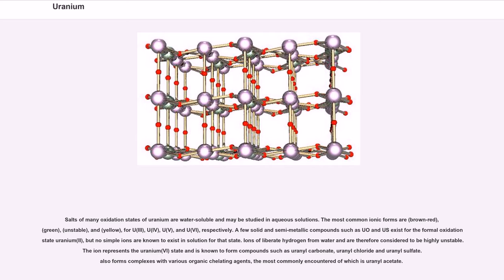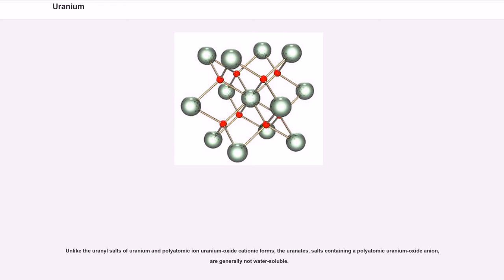Salts of many oxidation states of uranium are water-soluble and may be studied in aqueous solutions. The most common ionic forms are U3+ (brown-red), U4+ (green), U5+ (unstable), and UO2^2+ (yellow) for U3+, U4+, U5+, and U6+, respectively. A few solid and semi-metallic compounds such as UO and US exist for the formal oxidation state uranium(II), but no simple ions are known to exist in solution for that state. Ions of U3+ liberate hydrogen from water and are therefore considered to be highly unstable. The UO2^2+ ion represents the uranium(VI) state and is known to form compounds such as uranyl carbonate, uranyl chloride and uranyl sulfate. UO2^2+ also forms complexes with various organic chelating agents, the most commonly encountered of which is uranyl acetate. Unlike the uranyl salts of uranium and polyatomic ion uranium oxide cationic forms, the uranates, salts containing a polyatomic uranium oxide anion, are generally not water-soluble.